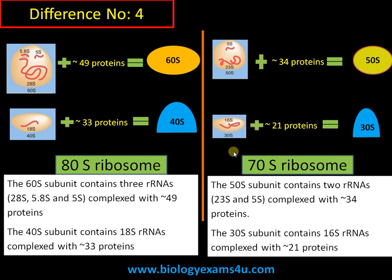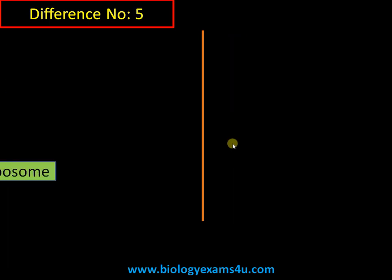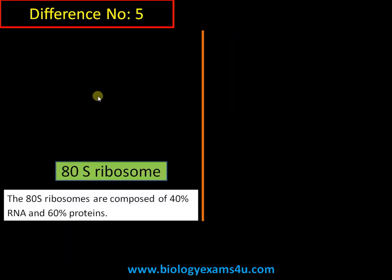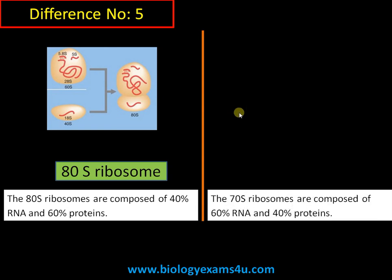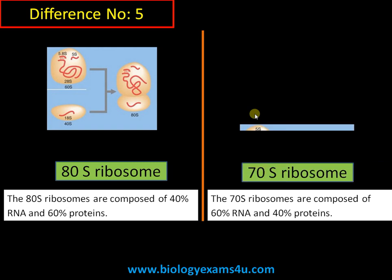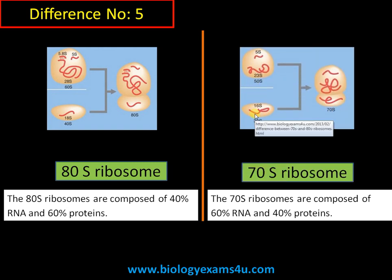Difference number five: 80S ribosomes are composed of 40% RNA and 60% protein, making them protein-rich. In contrast, 70S ribosomes are RNA-rich, consisting of 60% RNA and 40% protein. These are the basic differences between 70S and 80S ribosomes. Thank you so much for your support — you are with Biologics.com.